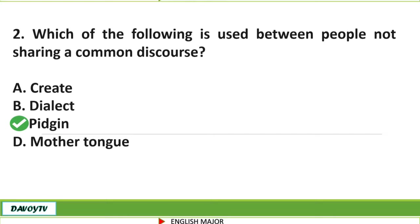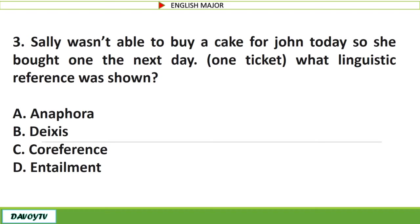Question number 3. Sally wasn't able to buy a cake for John today, so she bought one the next day. What linguistic reference was shown? A. Anaphora. B. Deixis. C. Coreference. D. Entailment. The correct answer is letter A: Anaphora.